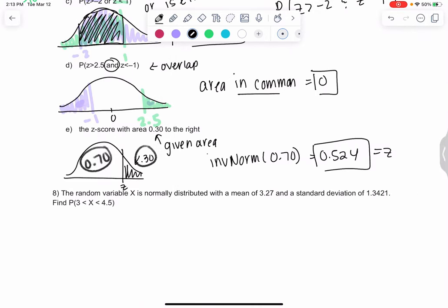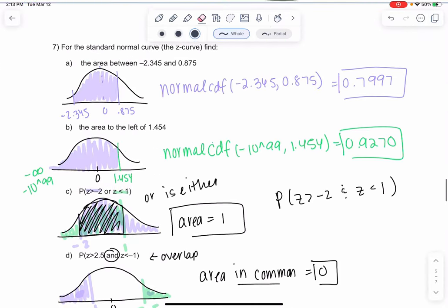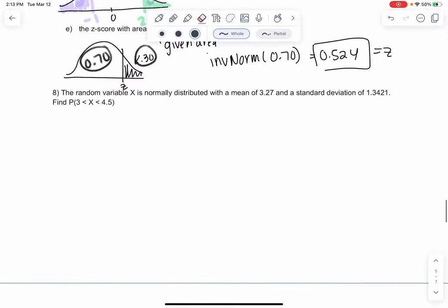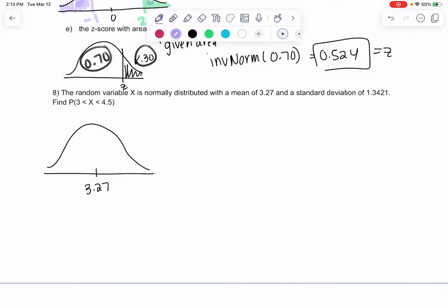Pause the video if you need to catch up with your calculator. This is just to help you check your answers, not actually do the practice test. Now we have a normal curve that's not a mean of 0, which means we need to find Z-scores. Our mean is 3.27, and we want to find the area between 3 and 4.5.